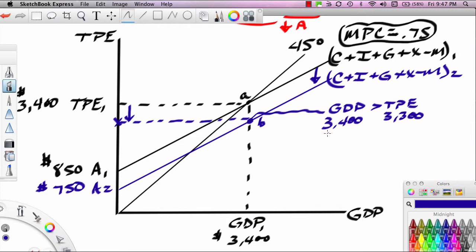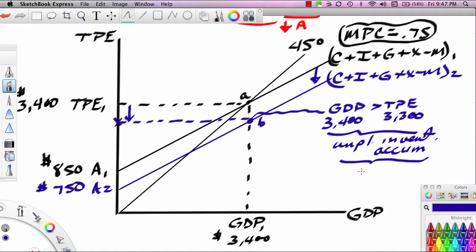This is not going to be stable. This is going to lead to an unplanned inventory accumulation. Inventory levels are going to build up unexpectedly. And what ends up happening when inventory levels build up unexpectedly, business people respond by cutting their output rate. When they cut their output rate, GDP is going to begin to fall. What happened initially was a drop in spending, but that drop in spending is going to lead to a drop in GDP.